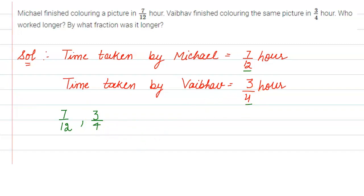So LCM is going to be: 12, 4; 6, 2; 3, 1. So LCM will be 2 into 2 into 3, which is 3 into 2 is 6, 6 into 2 is 12.